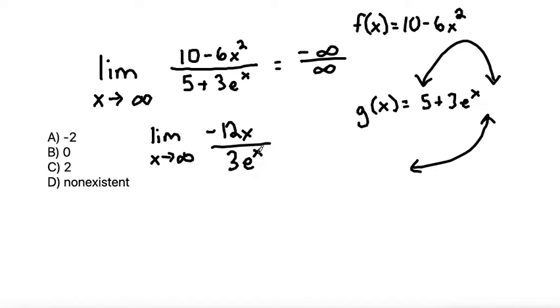And those are just general derivative rules. And also keep in mind that I took the derivative of the top as an individual function and the derivative of the bottom separately as an individual function, and I didn't use the quotient rule because I'm using L'Hopital's rule to take this derivative.